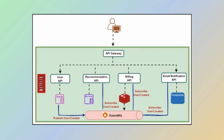Choreography follows an event-driven model. Take Netflix for instance. When a new user registers, the user management service triggers an event like "user created." Other services — recommendations, billing, and email notifications — listen for this event and take action independently. The recommendation service creates personalized suggestions, billing sets up payment info, and the email service sends a welcome email. No central coordinator is needed in choreography.